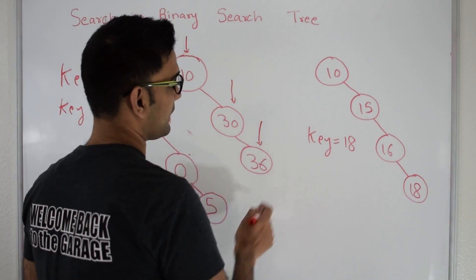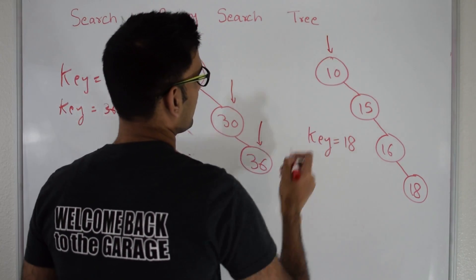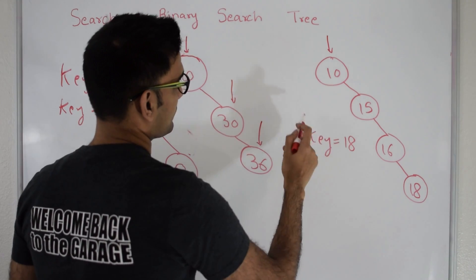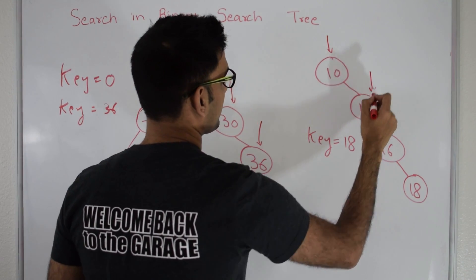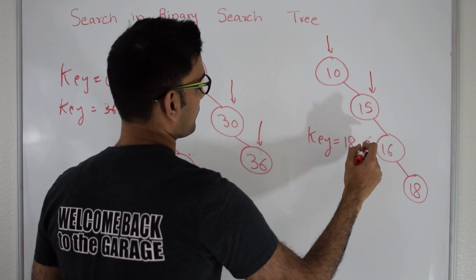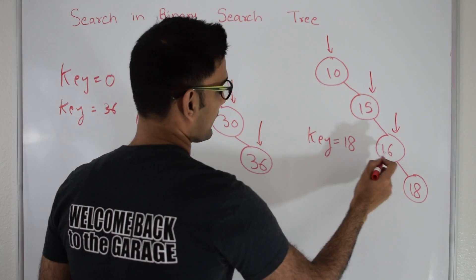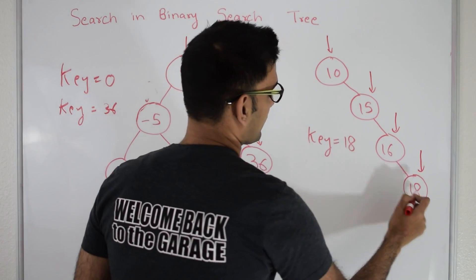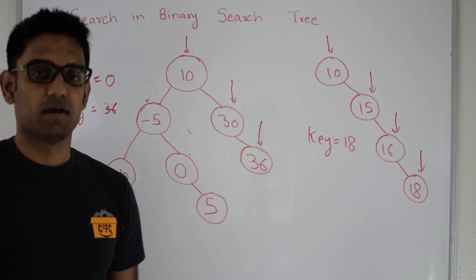Let's try for key 18 in this tree. Here, 18 is not same as 10 and 18 is greater than 10, so we go on the right. At 15, 18 is not same as 15 and it's greater than 15 so we go on right. Again 16 is not same as 18 so we go on right, and this time they are the same so we return this particular node.